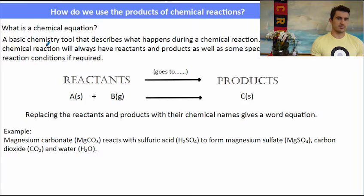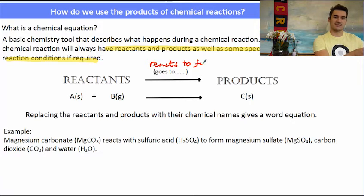So what is a chemical reaction, a chemical equation? A chemical equation is a tool that describes a chemical reaction. It will always have reactants and products as well as some special conditions if required. In a chemical reaction we have reactants on the left and the arrow either represents goes to or reacts to form products. So reactants react to form products.